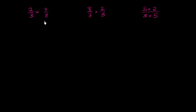We have three expressions here. This is 2/3 times 7/8. The second expression is 8/7 times 2/3. The third expression is 5 times 2 over 3 times 5.